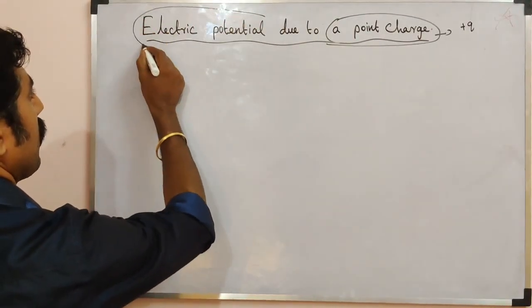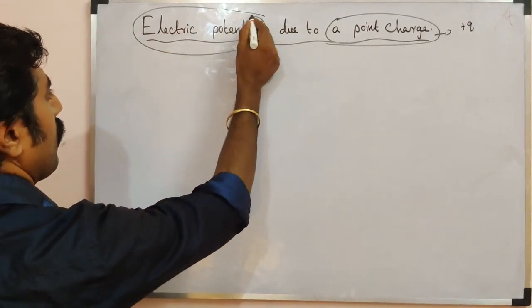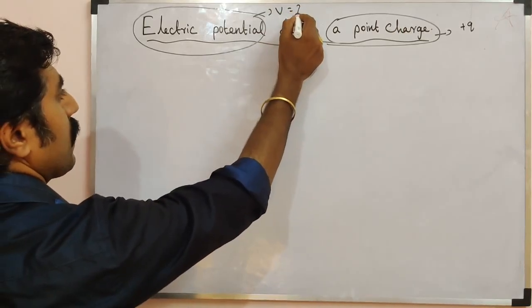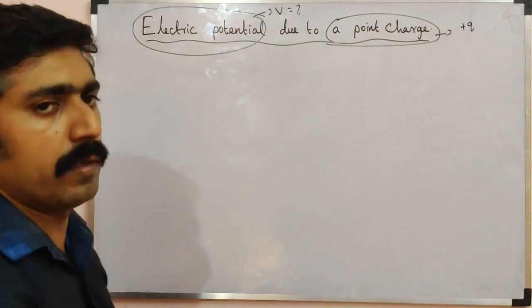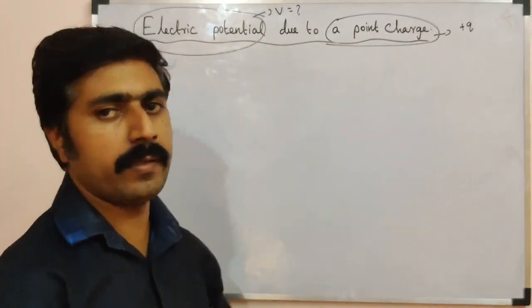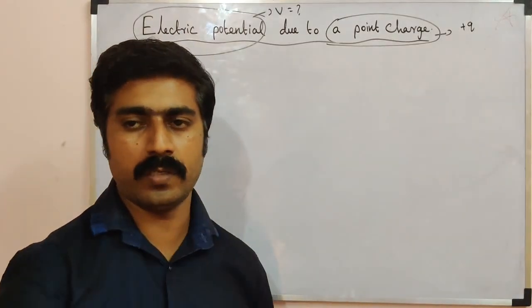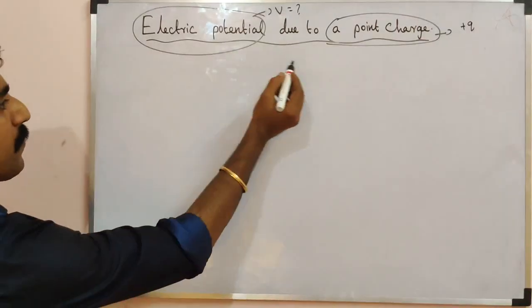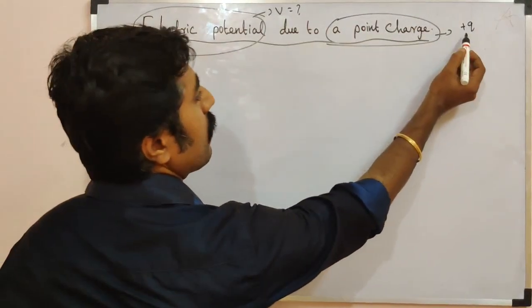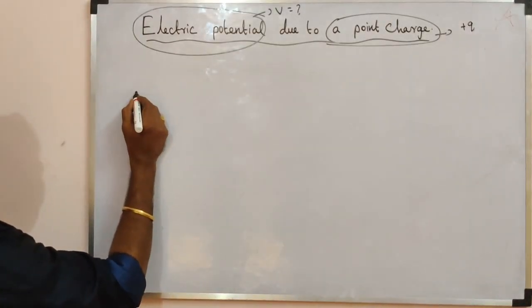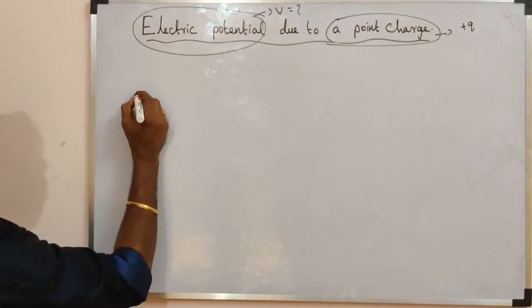Electric potential is denoted by the letter V. So V is equal to... due to a point charge. First, take a positive point charge, that is plus Q.